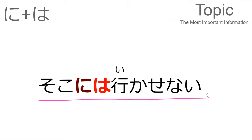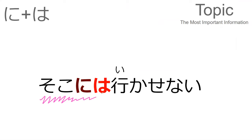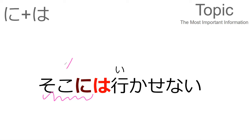By default, ga marks objects — for example, ringo ga suki, I like apples. Wa can be used instead of ga when marking an object to make something very important. For example, if someone insinuated you like oranges when you've told them you love apples, you would use wa. This is called the topic marker wa — it marks the topic and can occur in many locations. Soko ni wa ikasenai — adding wa stresses soko, meaning I will not allow you to go to that location specifically.